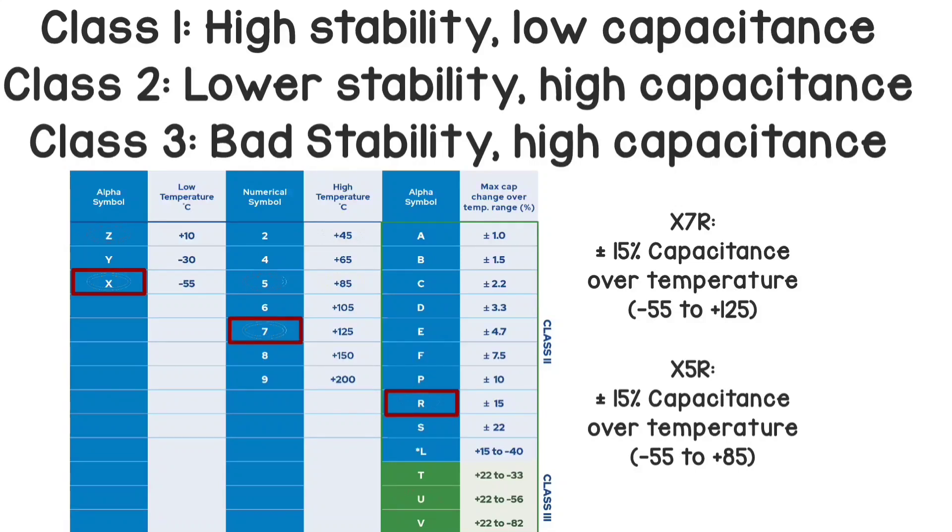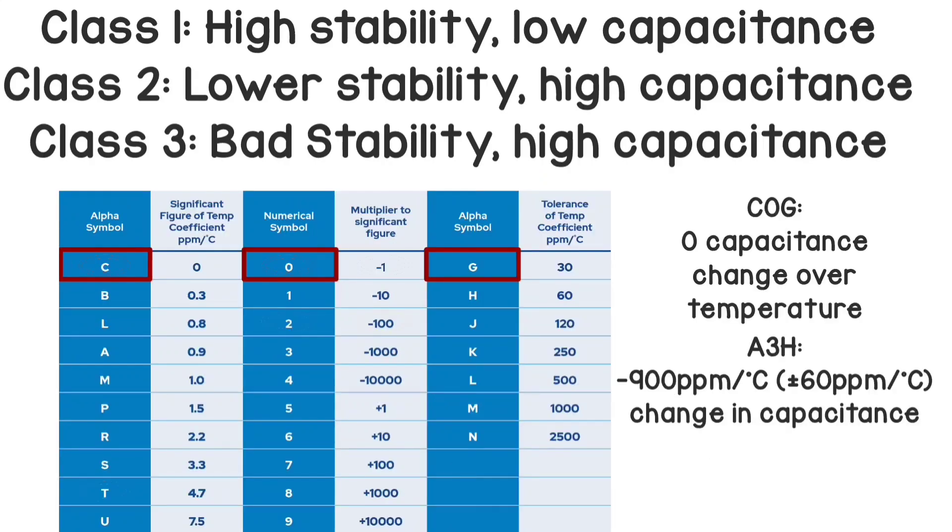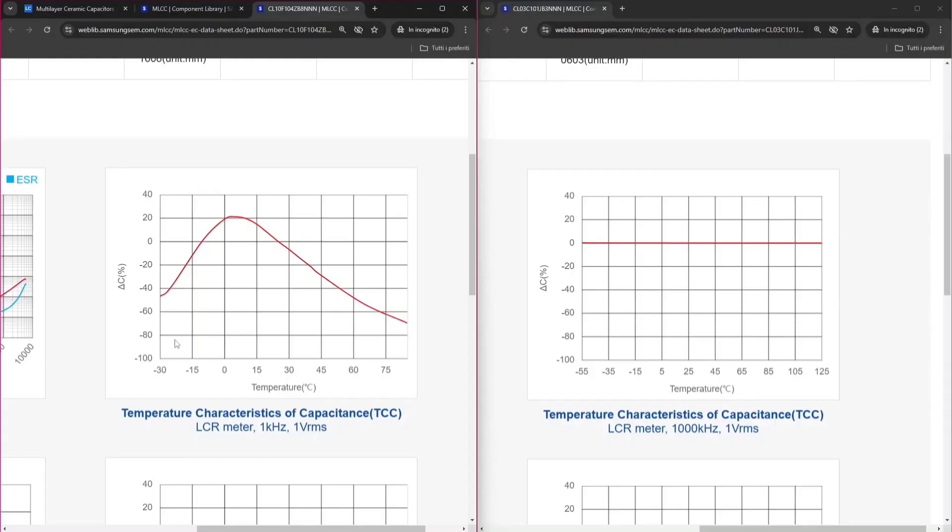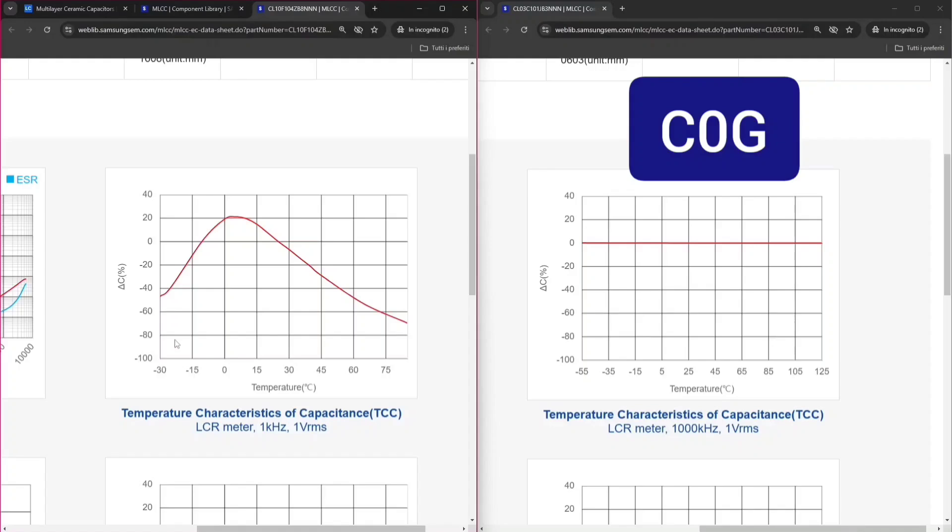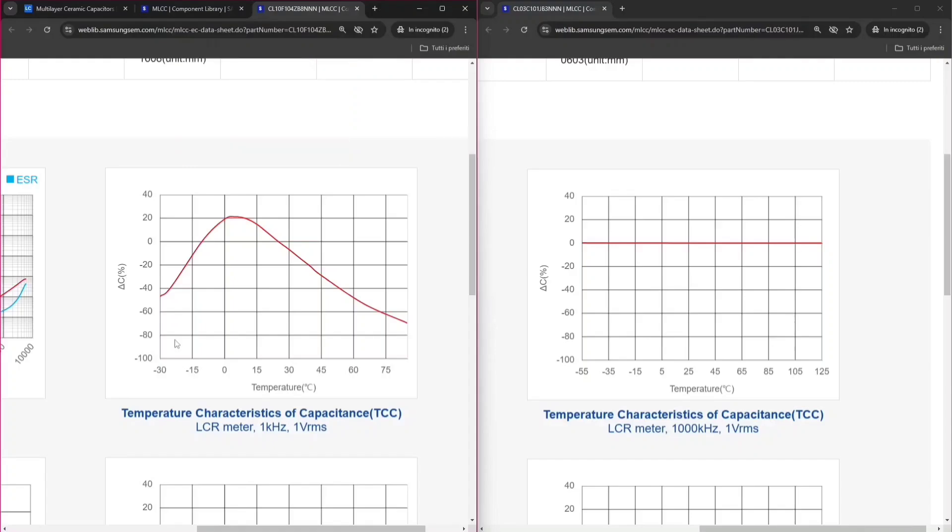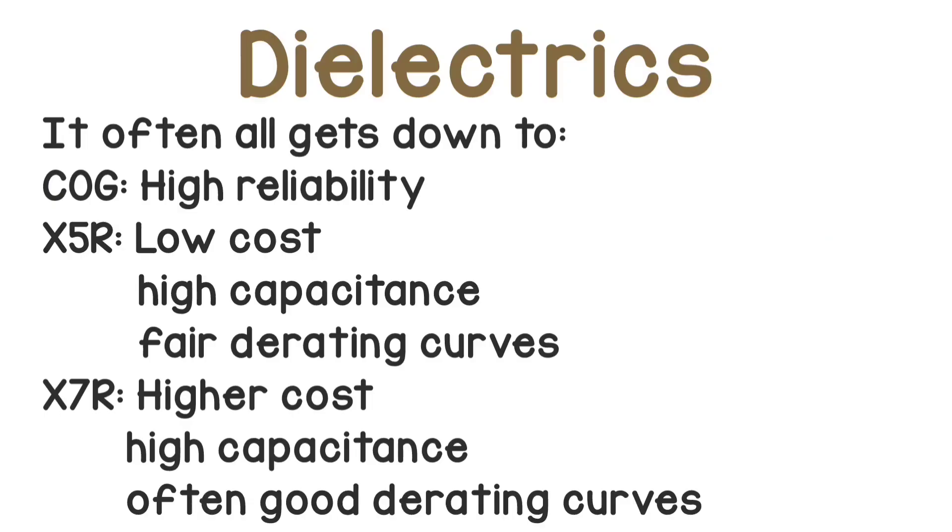Let's do an example. If you have an X7R capacitor, it means it will have ±15% capacitance tolerance, from -55 degrees Celsius to 125 degrees Celsius. Whereas if you have a C0G capacitor, you have a zero change with temperature. That was the capacitor on the right when we compared temperature derating. On the left we had a Y5V capacitor, that was a class 3. Could be hard to remember all those codes, but most of the time it all gets down to three dielectrics, that are C0G, X5R and X7R.